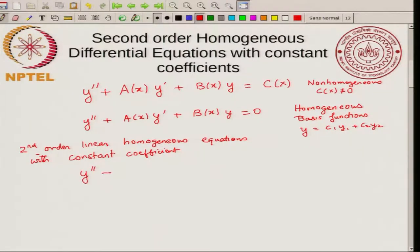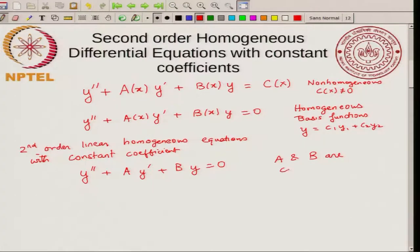You will have y double prime plus A times y prime plus B times y equal to zero, where A and B are constants. And obviously y is a function of x.